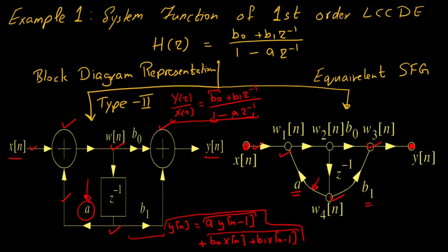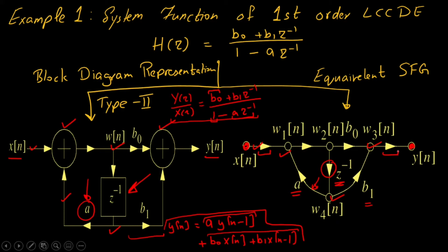For unit delay, we express z-inverse in terms of this multiplication. The unity gain at the input and output represents the input and output of the system, and the intermediate nodes are labeled as w1(n), w2(n), w3(n), and so on.